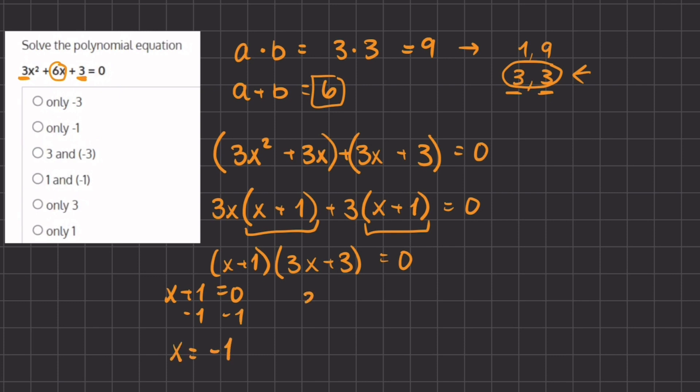If we set our second one equal to 0, 3x plus 3 equals 0, we can subtract 3 on both sides and we have 3x equals negative 3. If we divide by 3 on both sides we have x equals negative 1.